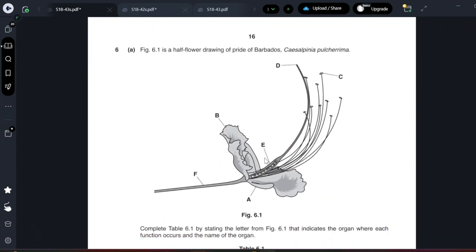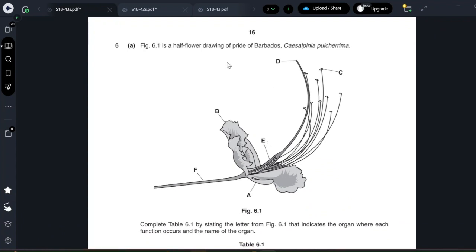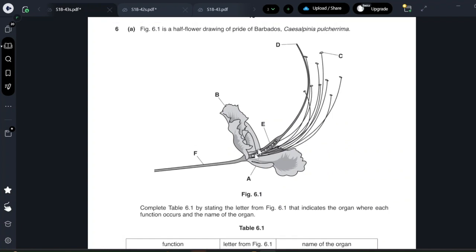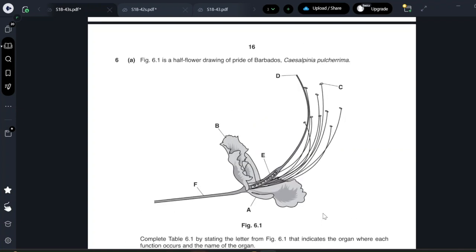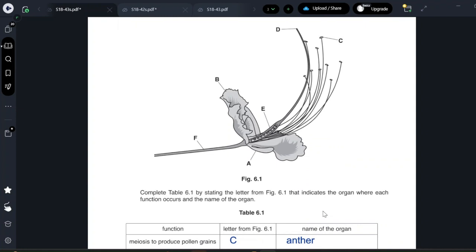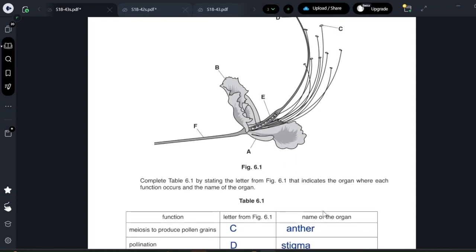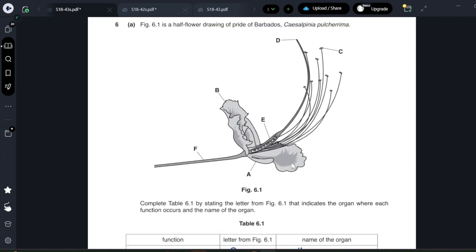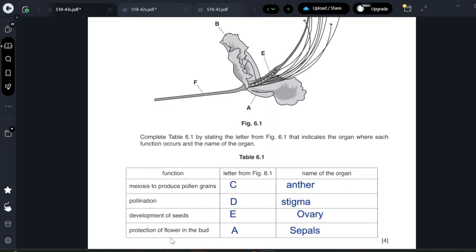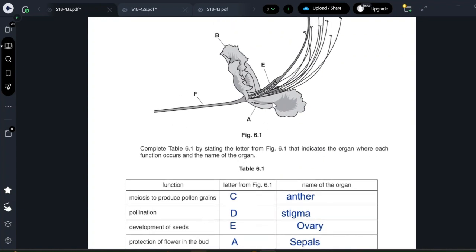Question figure 6.1 is a half flower drawing of pride of barbados. Complete the table by stating the letter from figure 6.1 that indicates the organ where each function occurs. Meiosis, where does meiosis happen? Meiosis of course it happens in the anther which is C which produces the pollen grains. Development of seeds, development of seeds inside the ovary. I will write E and ovary. Protection of the flower while it is a bud before the flower opens, this is the sepals and it is A which is the small green leaves.